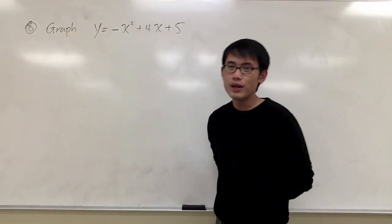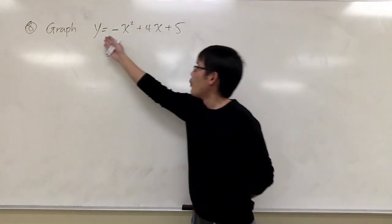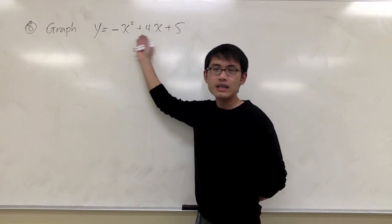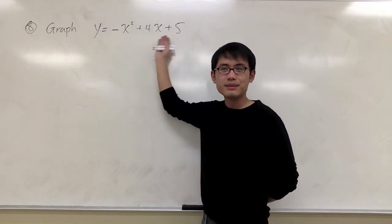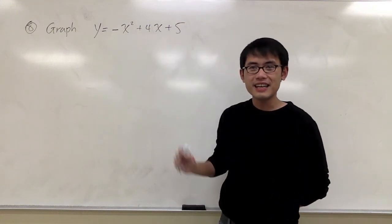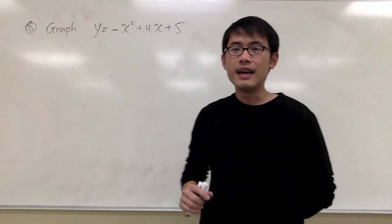For question number 8, we are going to graph the equation y is equal to negative x squared plus 4x plus 5. Notice that this is an equation of a parabola.